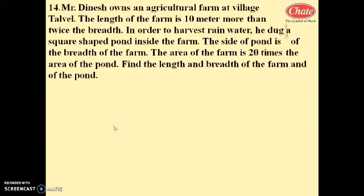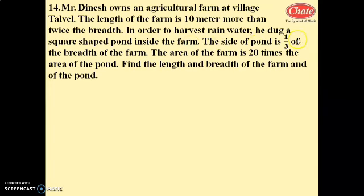Hello dear students. Now we are going to start question number 14 from the problem set. Mr. Dinesh won an agriculture farm at village Talwe. The length of the farm is 10 more than twice the breadth. In order to harvest rainwater, he dug a square-shaped pond inside the farm. The side of the pond is 1/3 of the breadth of the farm. The area of the farm is 20 times the area of the pond. Find the length and breadth of the farm and of the pond.